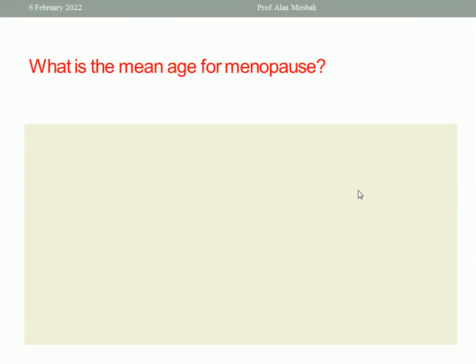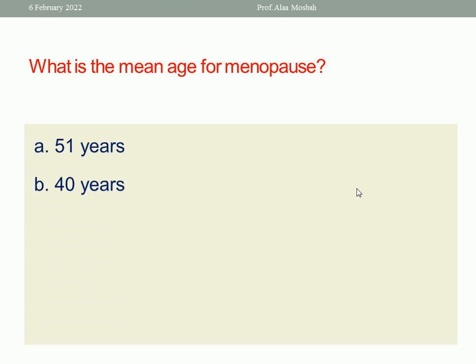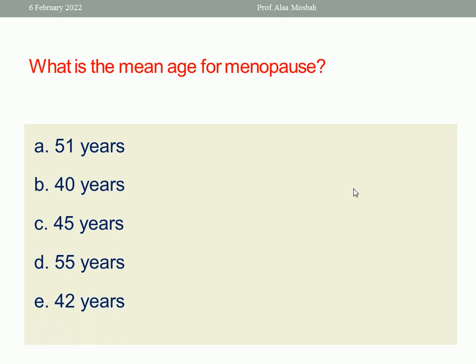What is the mean age for menopause? Options: 51 years, 40 years, 45 years, 55 years, or 42 years? The best one-response answer here is 51 years — that is the mean age for menopause.